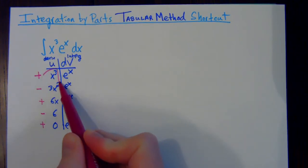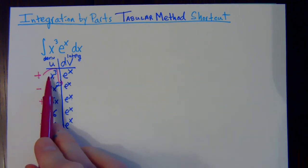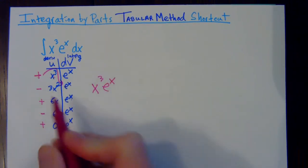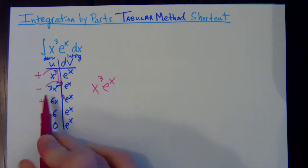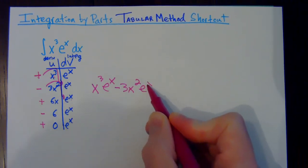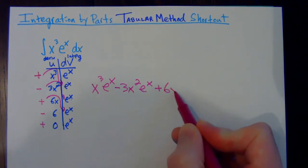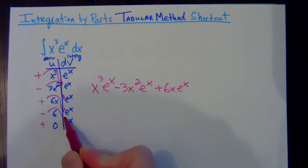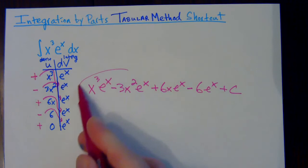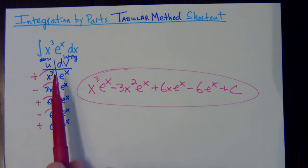Once you have the chart, you multiply the diagonals. You go this times this with the sign — so positive x cubed times e to the x is your first term. Then you go negative 3x squared times e to the x. Keep doing that all the way down: positive 6x times e to the x, then minus 6 times e to the x. Then tag on your plus C and you're done.